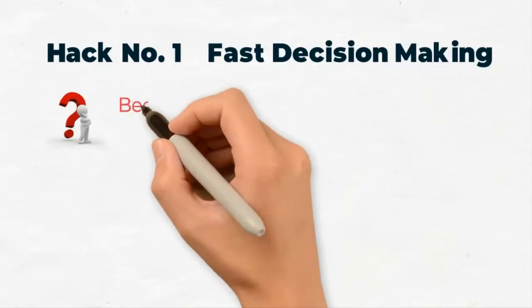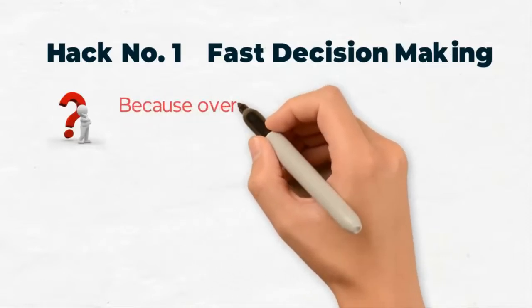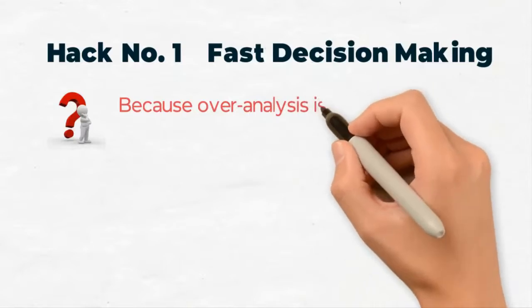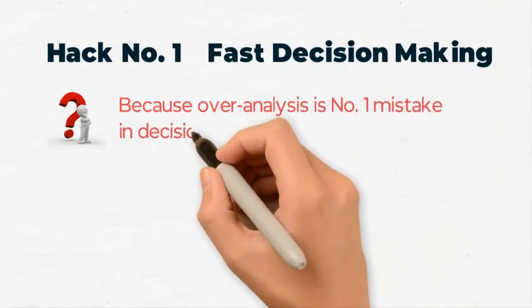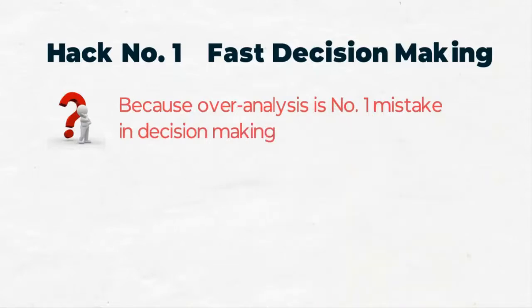Well, making a fast decision for good reasons is often equivalent to taking a personal risk. In fact, over analysis is the number one mistake made by large organizations when it comes to decision making.